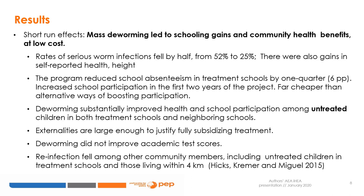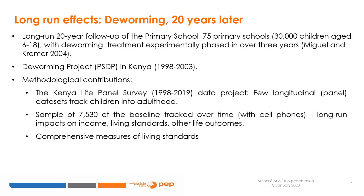These externalities are large enough to justify fully subsidizing the treatment. Miguel and Kremer studied the effects of this program after 20 years, based on the follow-up of 75 primary schools with a population of 30,000 children. The deworming treatment was experimentally phased in as part of the Primary School Deworming Project in Kenya. The Kenya Life Panel Survey covers the period 1998 to 2019.